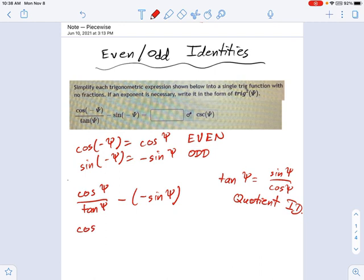Let's call this cosine of psi, all divided by sine of psi over cosine of psi. So that's looking a little ugly now. But over here, at least, it's just a nice, simple plus sine of psi.